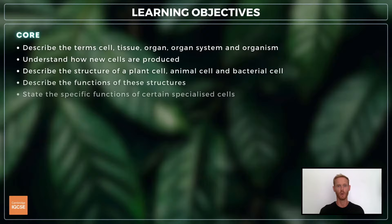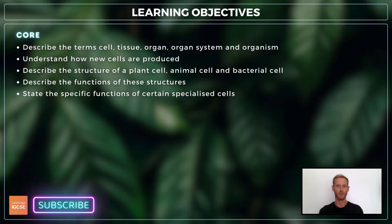For topic 2.1, you need to be able to describe the term cell, tissue, organ, organ system and organism, understand how new cells are produced, describe the structure of a plant cell, animal cell and bacterial cell, describe the functions of these structures, and state the specific functions of certain specialized cells.